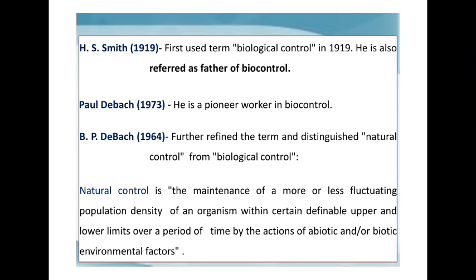One of the most important scientists related to biological control is H.S. Smith, who is referred to as the father of biological control and also gave the term 'biological control.' Paul DeBach is one of the pioneer workers in biological control, and he also gave the concept of natural control — the maintenance of a more or less fluctuating population density of an organism within definable upper and lower limits over a period of time by the action of biotic and abiotic environmental factors.